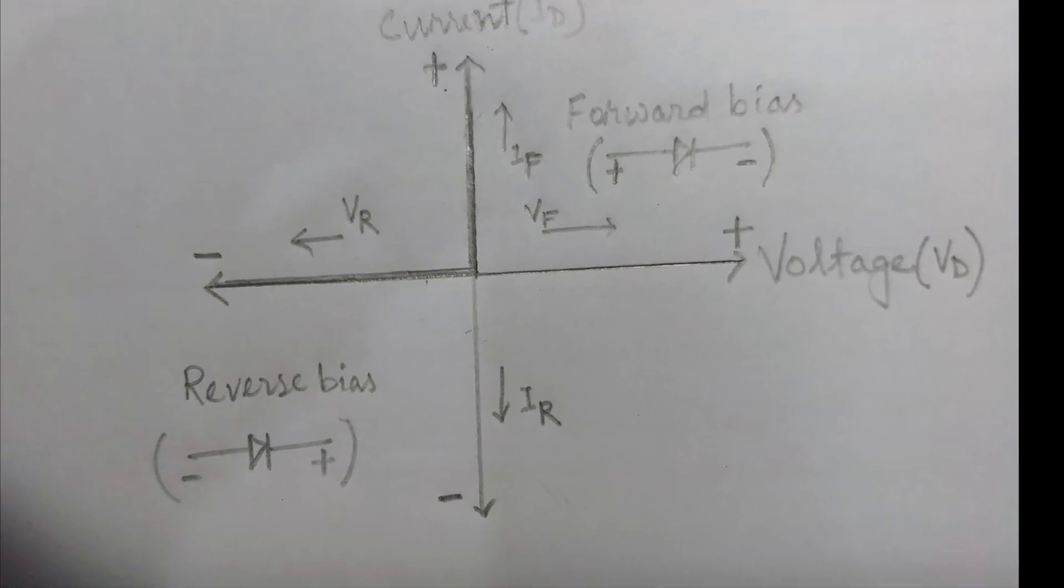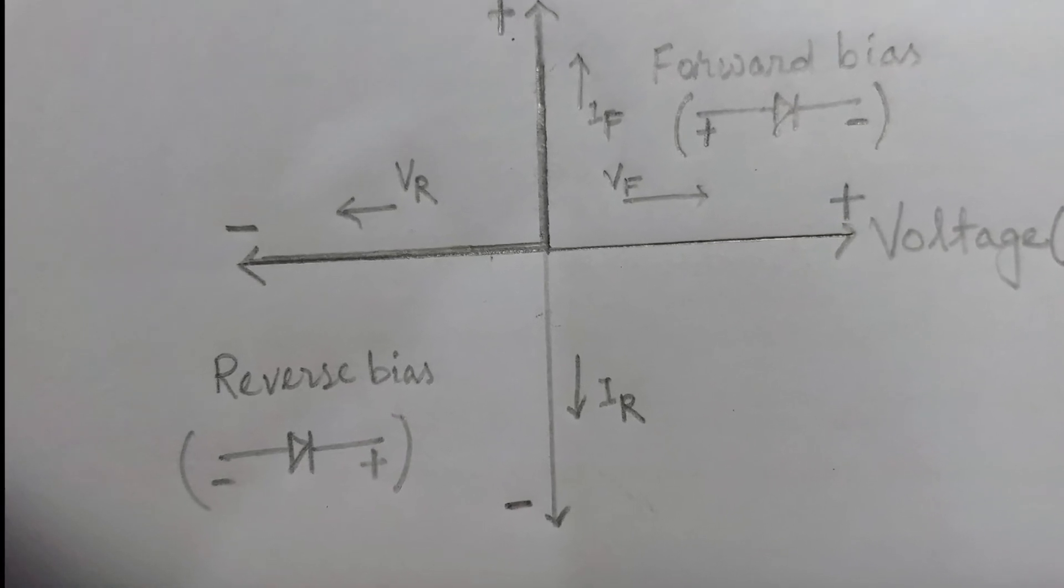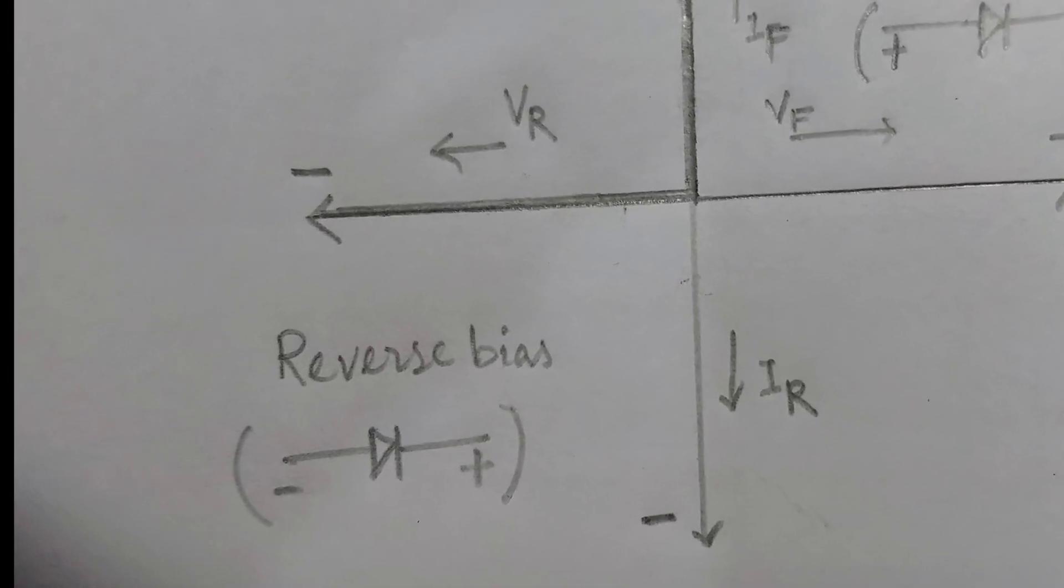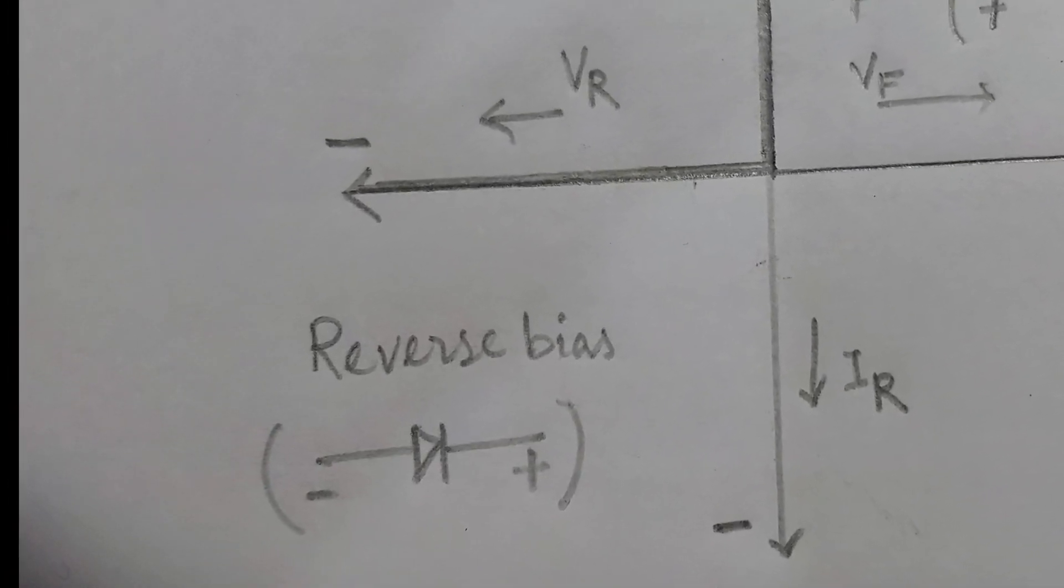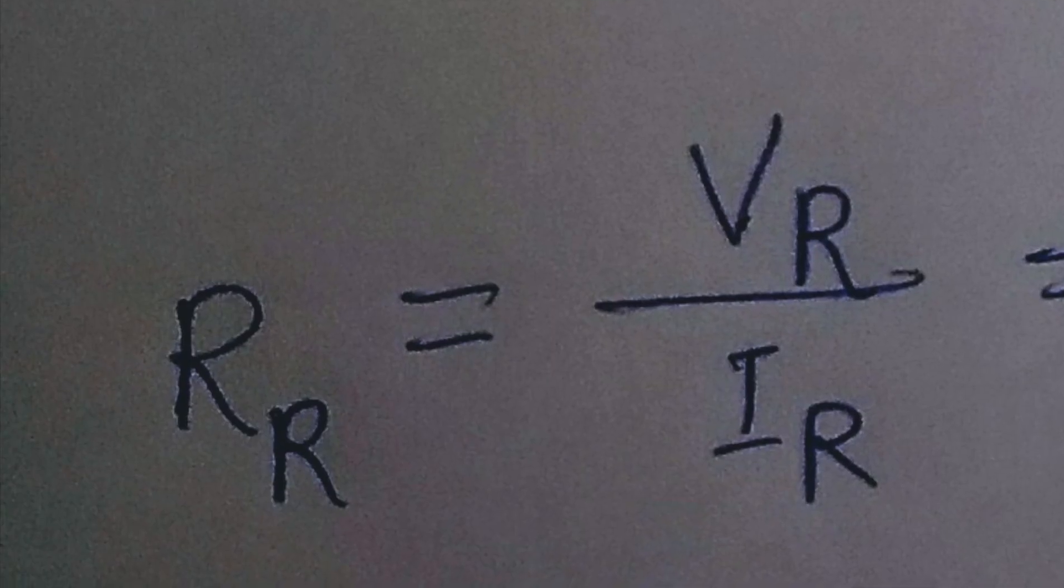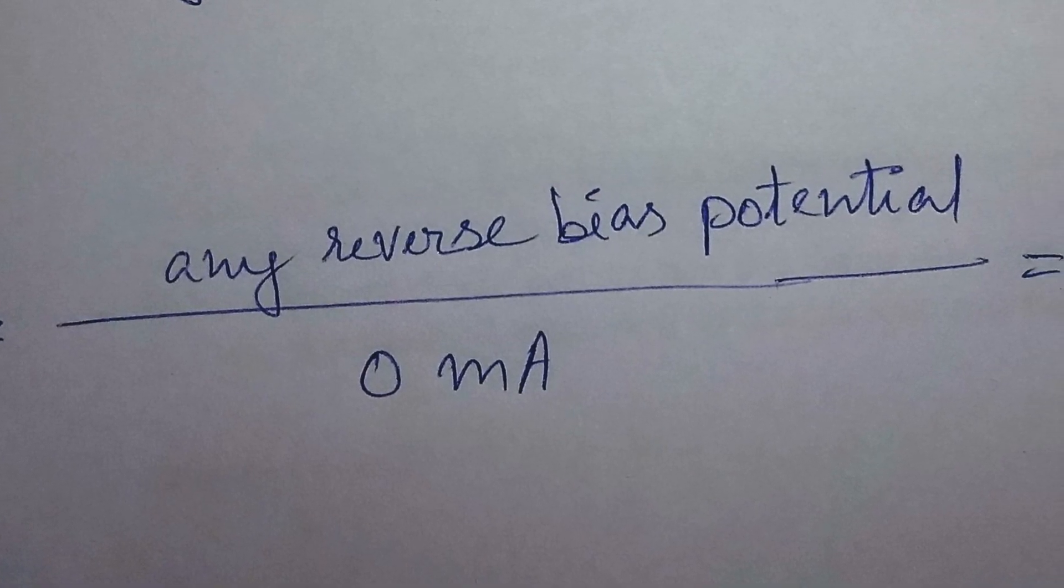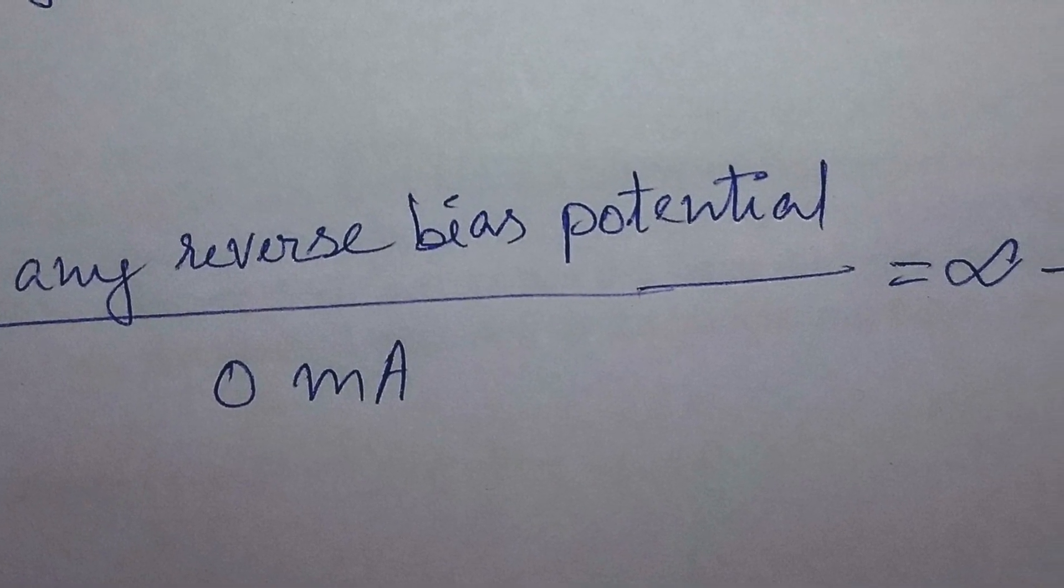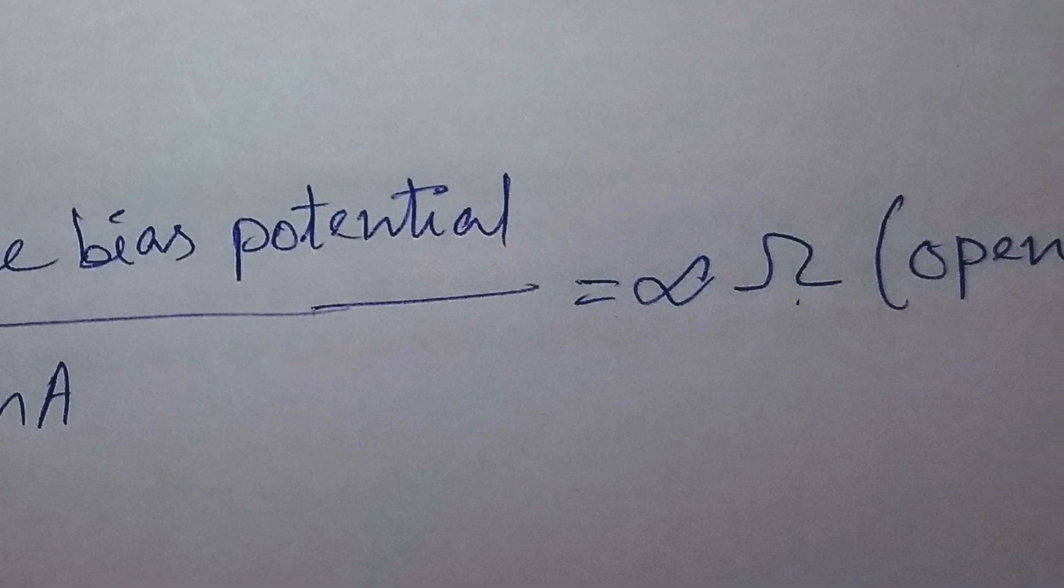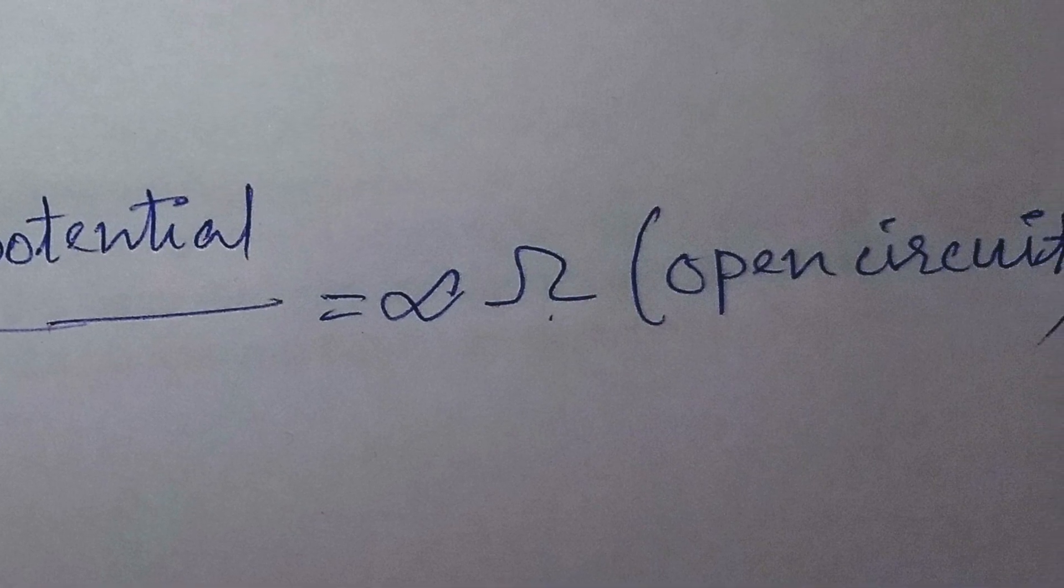Now, the second case is if the diode is reverse biased. Let Vr be the reverse voltage and IR be the reverse current. Then the reverse resistance Rr is given by Vr divided by IR, that is equal to negative voltage or reverse bias potential divided by 0mA, which is infinity, or we can say that the diode acts as open circuit.